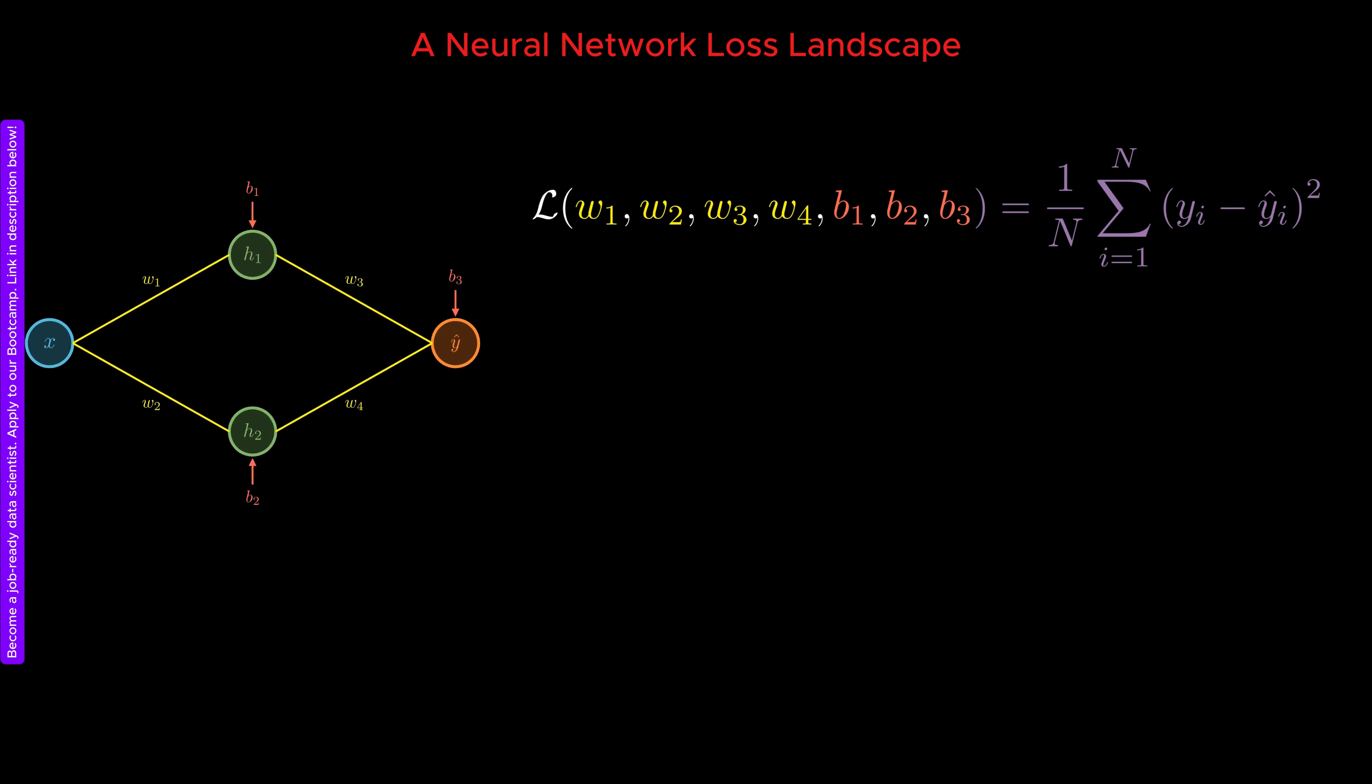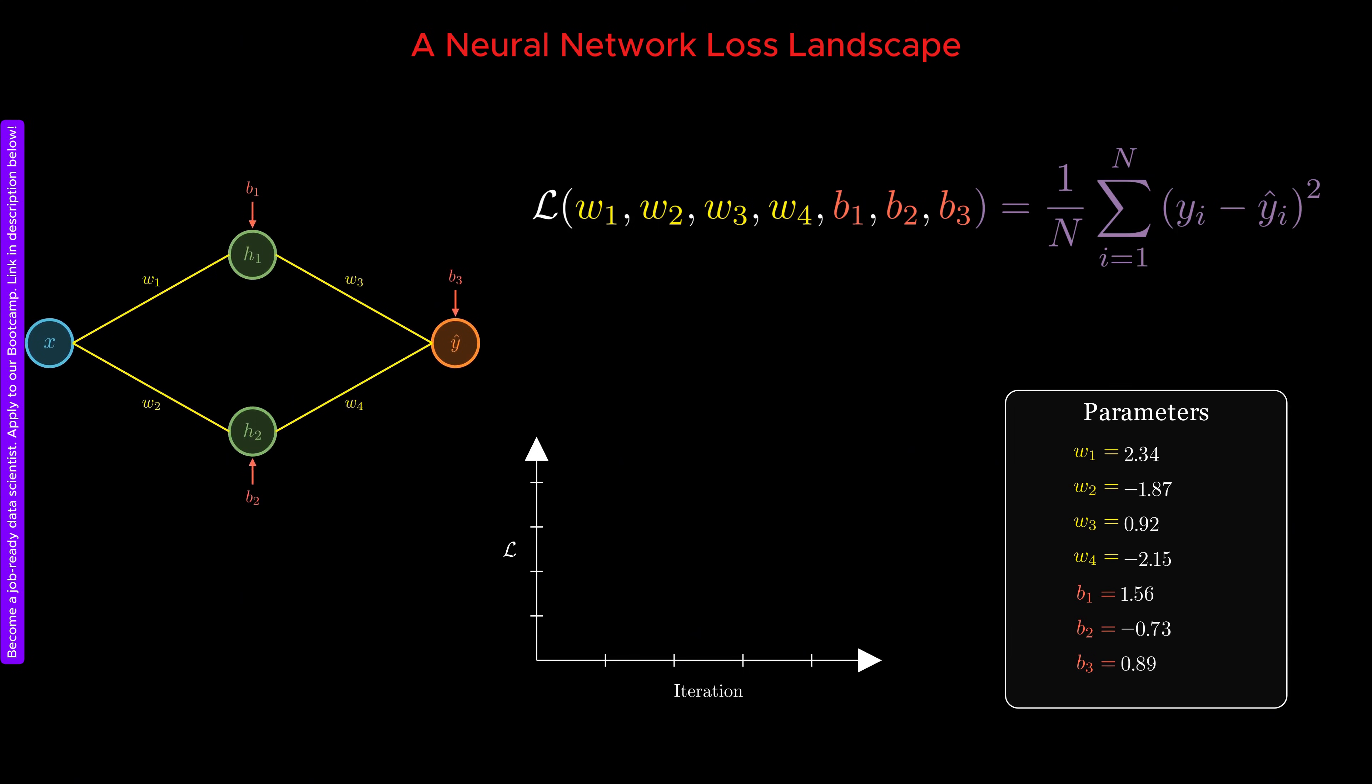Under normal circumstances, we would minimize this loss function using gradient-based optimization methods to find the optimal parameter values. These optimal values correspond to the global minimum of L. Since we want to locate this global minimum using the microscope, we multiply the loss function by minus one so that its minima appear as maxima in the visualization.